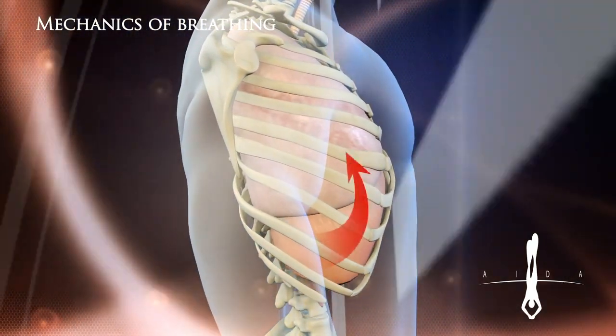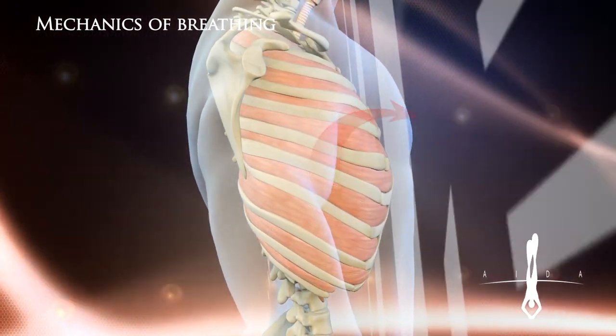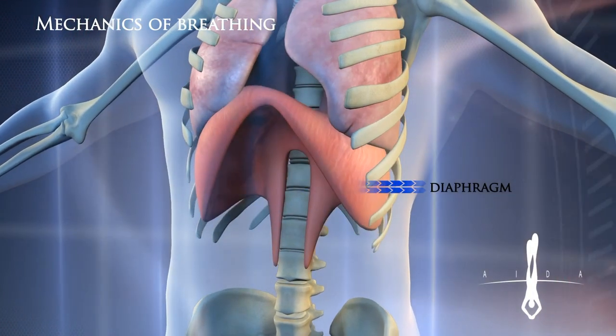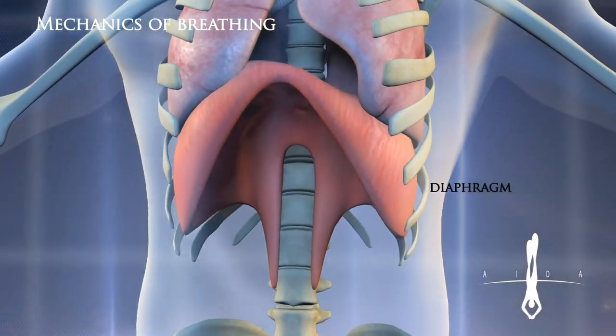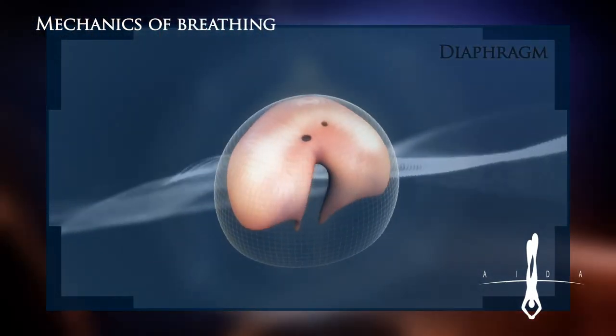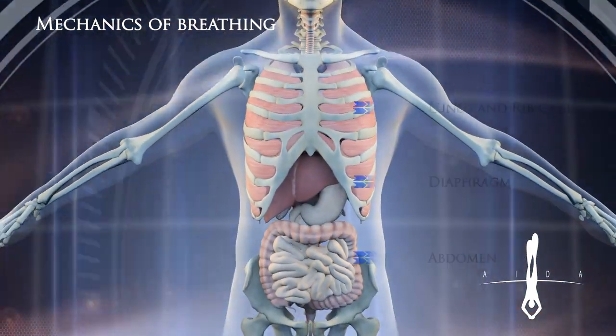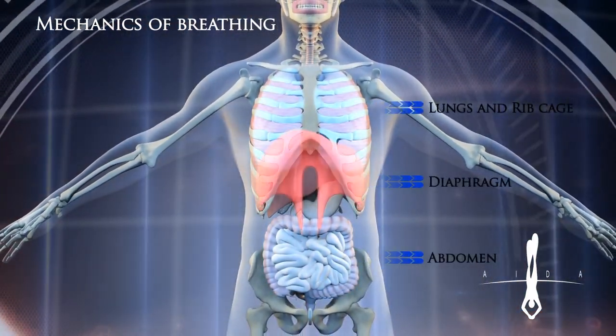So as you breathe in and your lungs fill up, your ribs also move. You have this thing right underneath your lungs called your diaphragm. Your diaphragm is kind of like an upside-down bowl, and when your lungs start to expand, that bowl inverts — it pulls down and pushes your stomach out of the way, so your stomach moves forward.